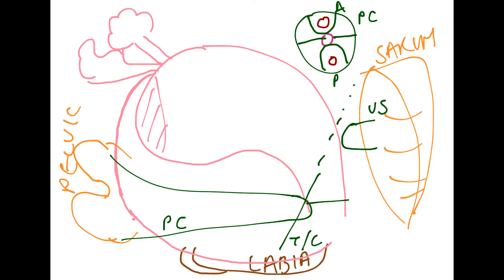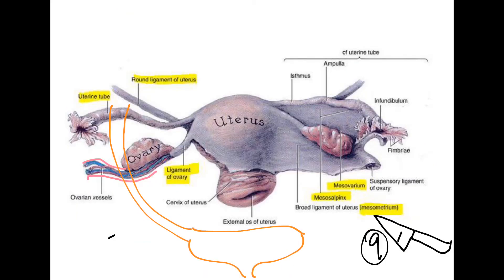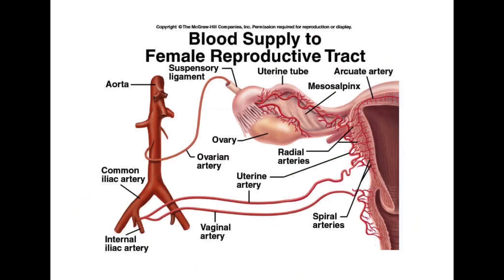So where does the uterus get its blood supply? The uterus actually gets its blood supply from the cardinal ligament or the transverse ligament. The uterine vessel comes from the internal iliac artery. So we have the internal iliac artery giving rise to the uterine artery, which travels to the uterus via the cardinal or transverse ligament.